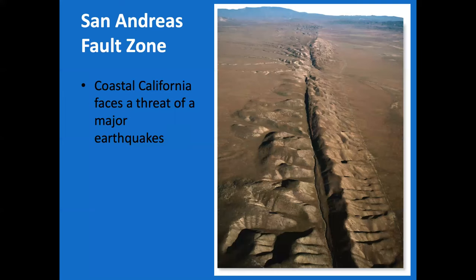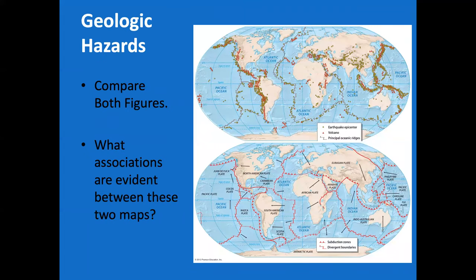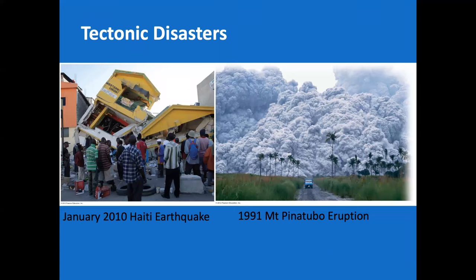The San Andreas Fault is an example where two plates are sliding past one another. The geologic hazards map shows small yellow circles for earthquakes and red triangles for volcanoes in particular regions — natural hazards that human populations have to deal with. Whether it be volcanic eruptions like Pinatubo in 1991, which cooled the Earth by about half a degree for about one year, or something as recent as the January 2010 Haiti earthquake, which unfortunately destroyed many areas with very poor construction code.